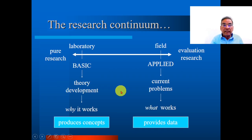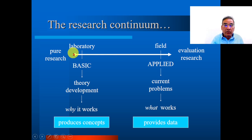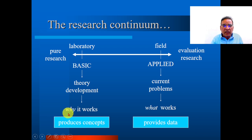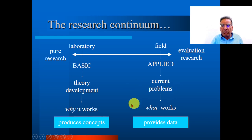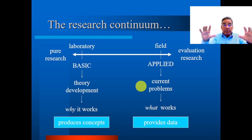Here is the distinction between pure research and evaluation research. In pure research, in the case of laboratory, we apply the basic theory, then we develop the theory, and after developing the theory, we see why it works — so we produce the concept. In field evaluation research: applied, current problem, what works, and provide data. So this is the concept of pure research versus evaluation research.